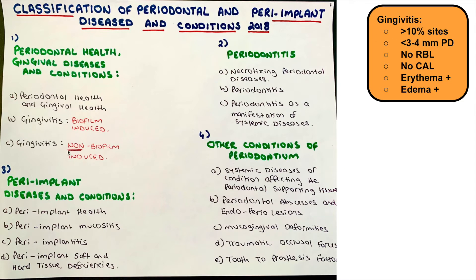The green headings are where the whole classification is embedded. First: periodontal health and gingival diseases and conditions. Second: periodontitis. Third: peri-implant diseases and conditions. And lastly, the other conditions of the periodontium for completeness. Under the first heading, periodontal health and gingival diseases and conditions, we have three subtopics: periodontal health and gingival health (what classifies as normal), gingivitis induced by biofilm, and gingivitis not induced by biofilm.